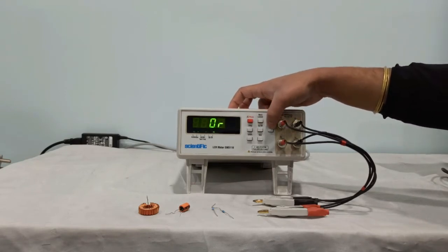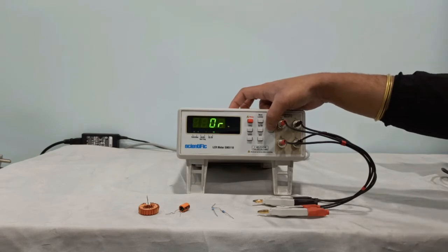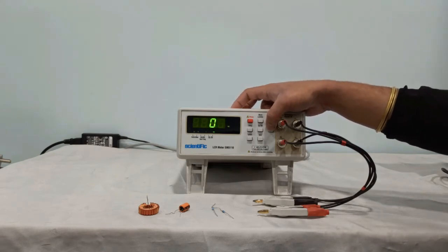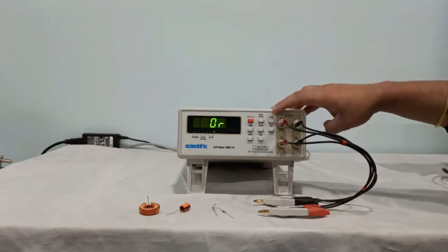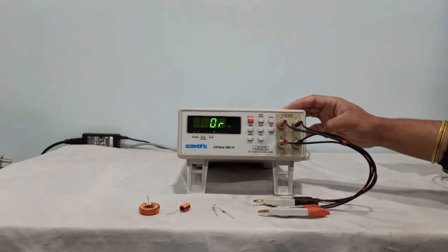Next is CAL switch. This is for probe compensation. This is used for zero compensation. You will have two compensation modes: open and short.